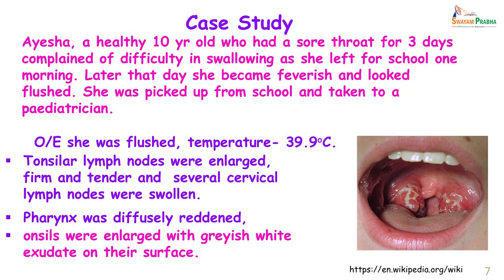We will start with the case study. Aisha, a healthy 10-year-old who had a sore throat for 3 days, complained of difficulty swallowing as she left for school one morning. Later that day she became feverish, looked flushed, and had to be picked up from school and taken to the paediatrician. On examination she was flushed, had a temperature of 39.9 degrees Celsius, her tonsillar and cervical lymph nodes were enlarged, and her pharynx was diffusely reddened.